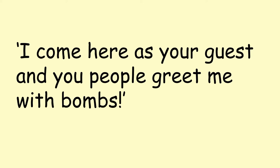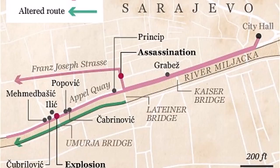They decided they weren't going to follow the original route, as it would take them down two narrow roads that wouldn't be particularly safe. They would instead follow the main road out of the city. Unfortunately, this conversation was carried out in German, and the driver of the car didn't speak German — he was from the Czech Republic. So the driver didn't understand that the route had changed, and when they continued down the Apple Quay he turned right onto Franz Josef Strasse.